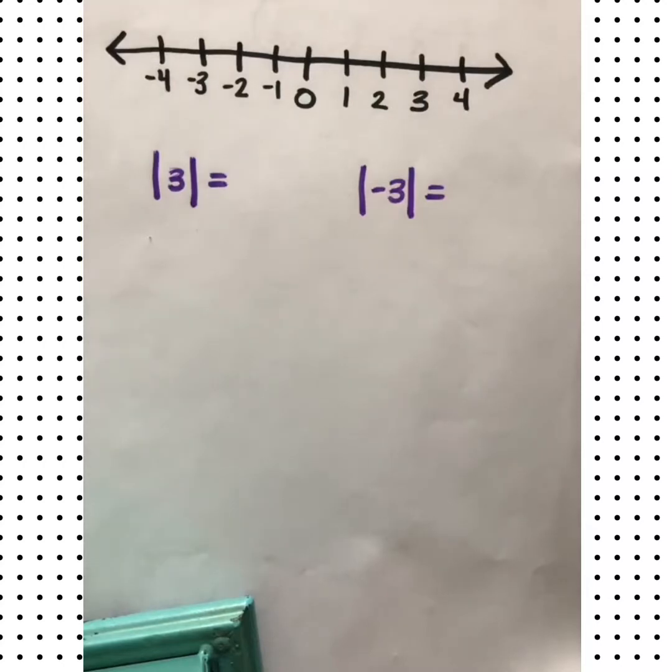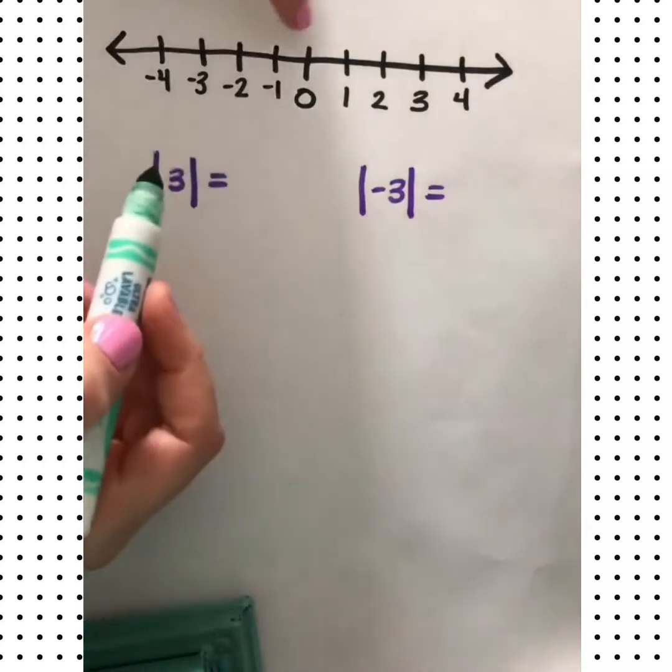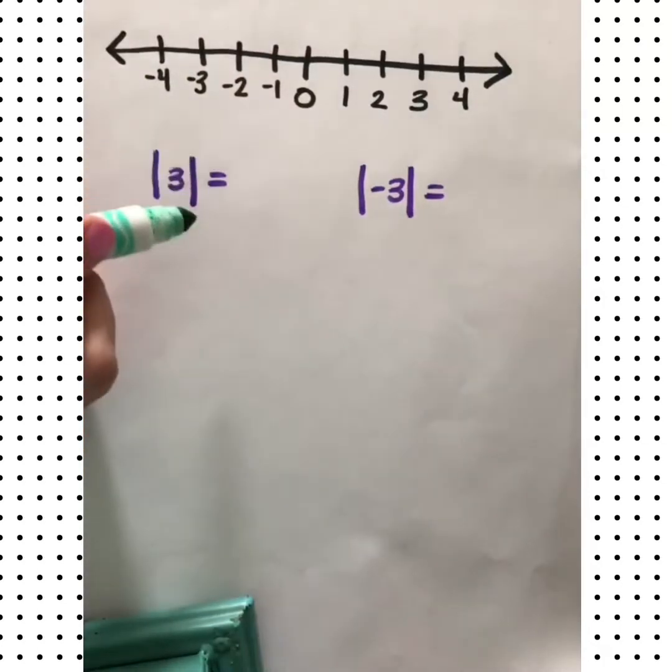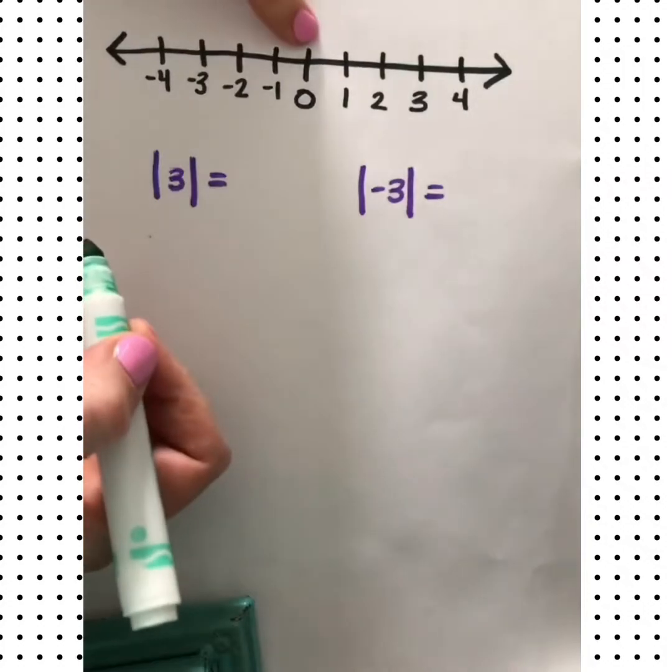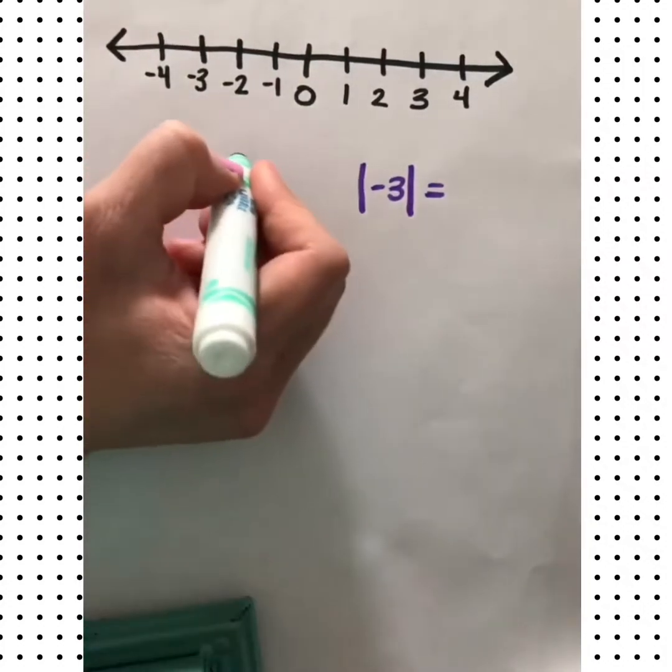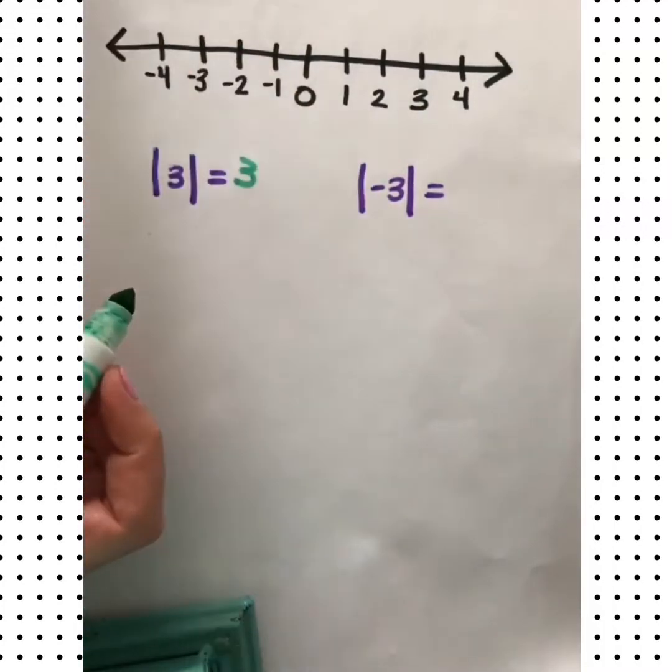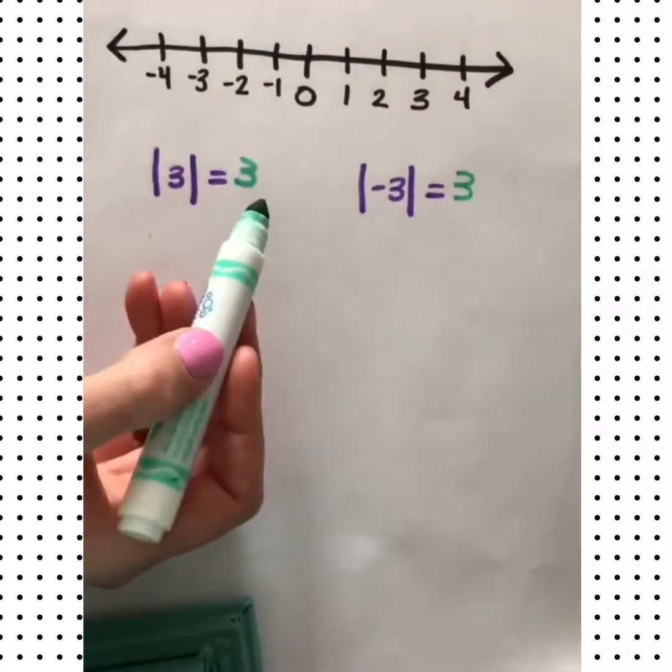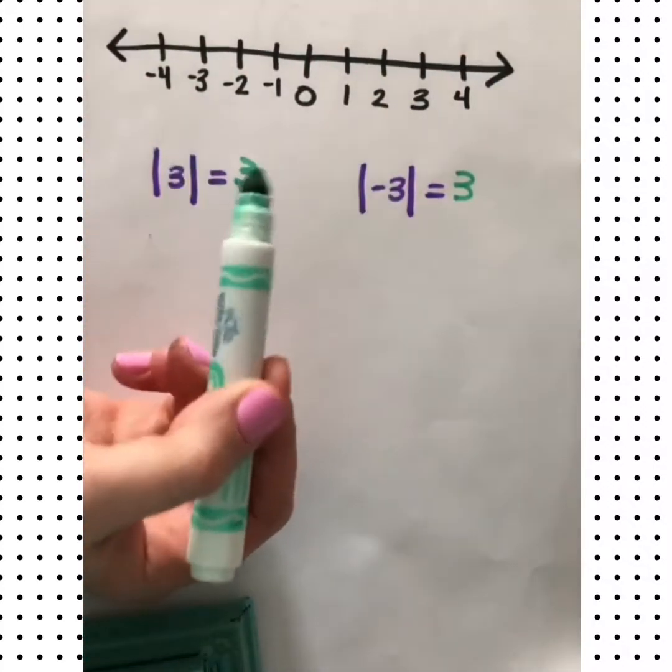Let's start by talking about what absolute value means. Absolute value means the distance from zero. When you see these bars here, that means absolute value. So the absolute value of 3, what is 3's distance from zero? Well that's just 3. Absolute value of negative 3, how far is negative 3 from zero? It's also 3. So you're always going to end up with a positive here because it's a distance.